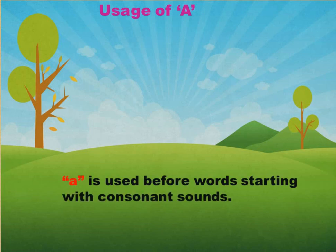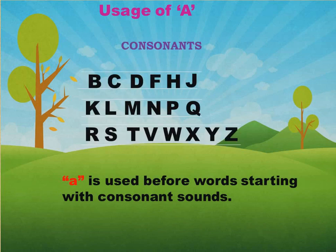A is used before the words starting with consonant sounds. And already we read what are the consonants: B, C, D, F, H, J, K, L, M, N, P, Q, R, S, T, V, W, X, Y and Z. All these letters are named as consonants, and whenever we get a word with consonant sounds, we place A in front of that.